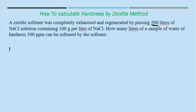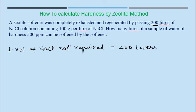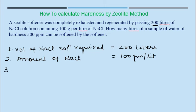You can see the numerical on the screen. The zeolite softener was completely exhausted and regenerated by passing 200 litres of NaCl solution containing 100 grams per litre of NaCl. How many litres of a water sample of hardness 500 ppm can be softened by this softener? So: volume of NaCl solution required to regenerate is 200 litres; amount of NaCl concentration is 100 grams per litre; hardness of the water sample is 500 ppm. What is asked? Volume of water sample.